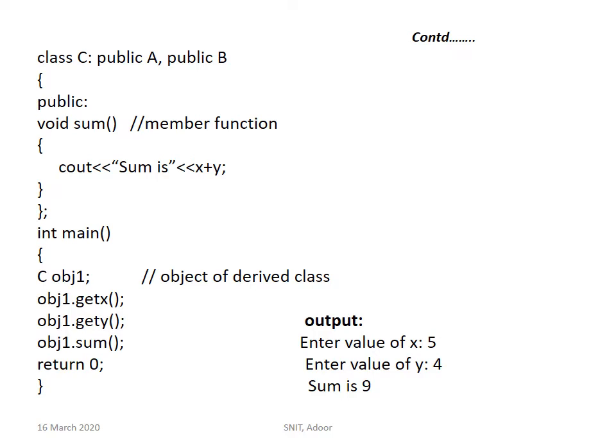OBJ1.getX — with the help of object OBJ1 for class C, using the dot operator, you call class A's member function getX, so you will get the value of X. Next is OBJ1.getY — Y value will be obtained. And then OBJ1.sum — both values will be added and you will get the sum. Then return 0 and close the curly bracket. The output: enter the value of X is 5, enter the value of Y is 4, and you get sum is 9.